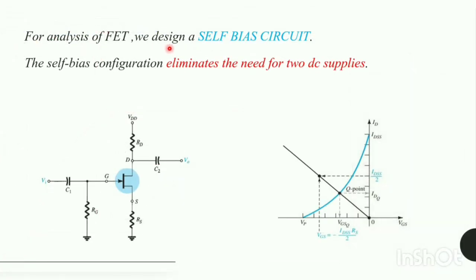Now for the analysis of FET, we design a self-biased circuit. The self-biased configuration eliminates the need for two DC supplies. This is a self-biased configuration. The corresponding plot defines the Q-point for our self-biased configuration.